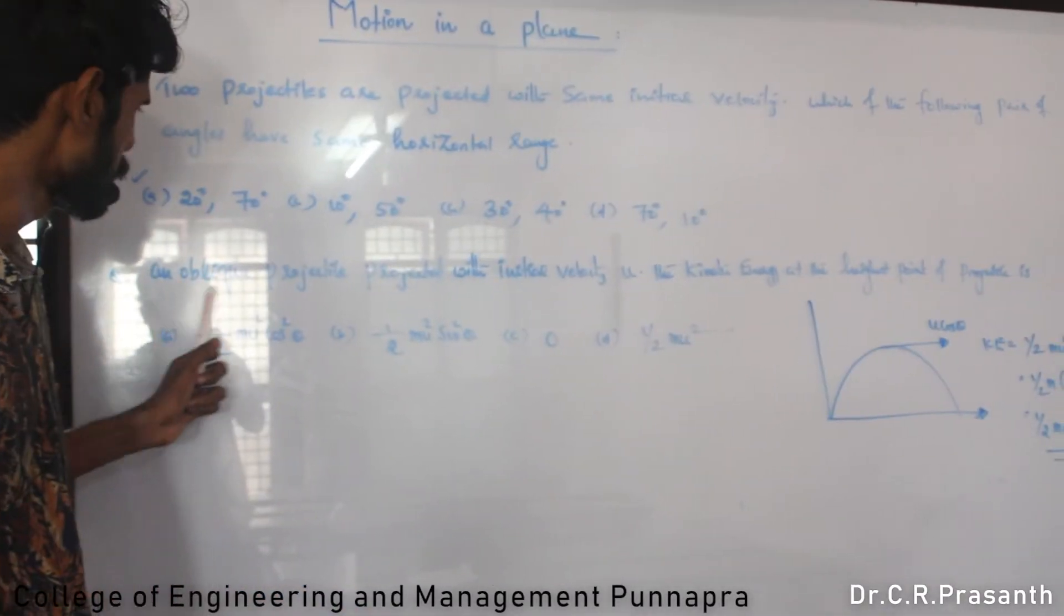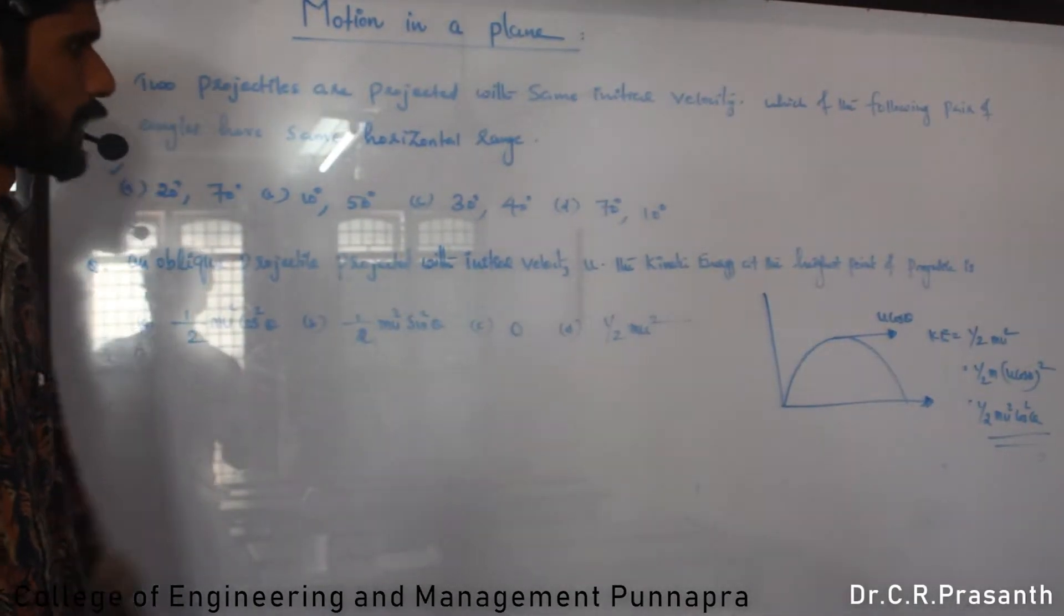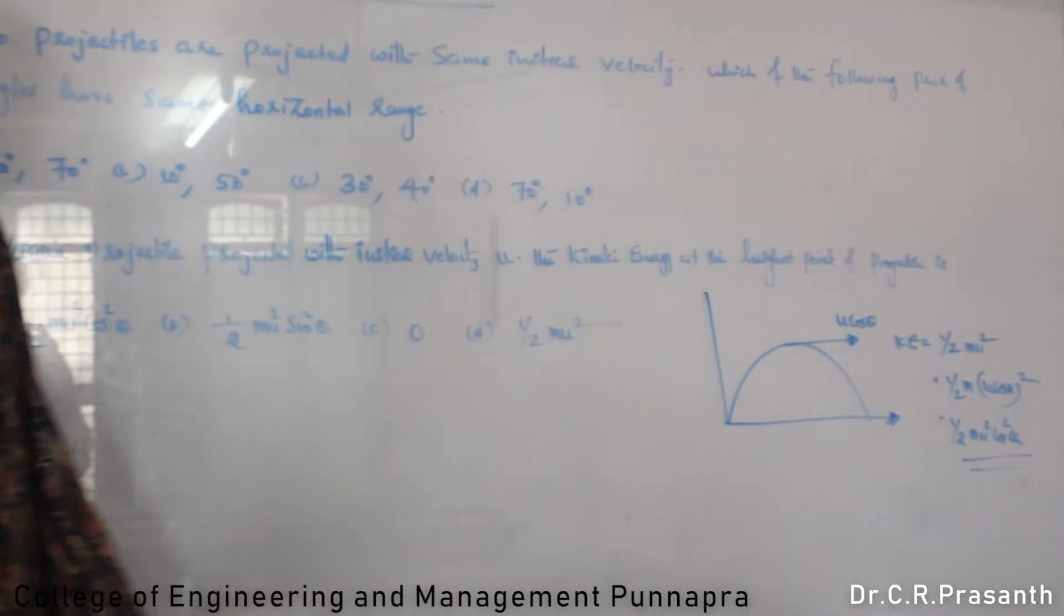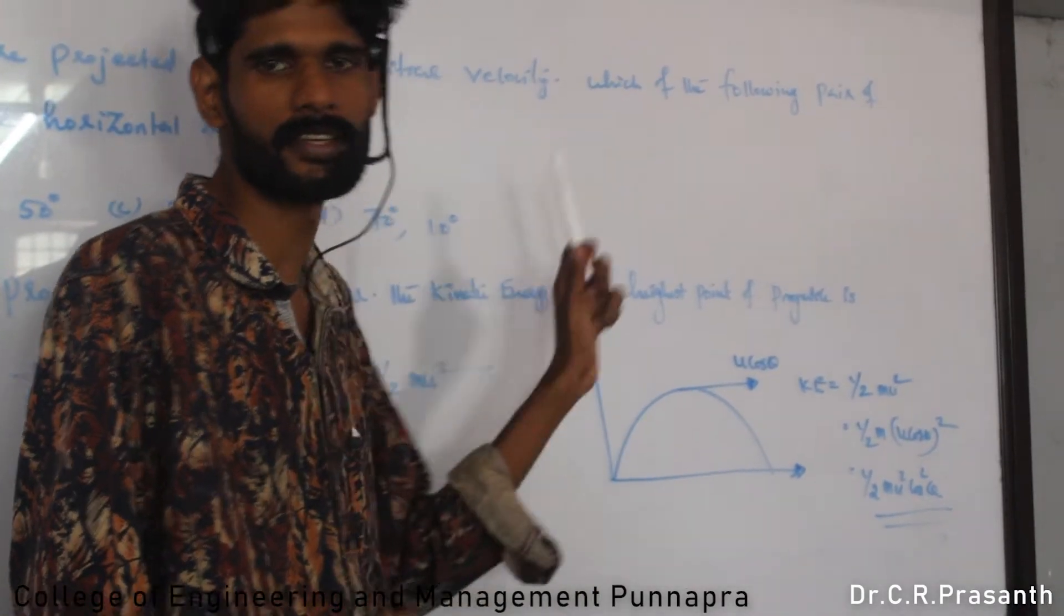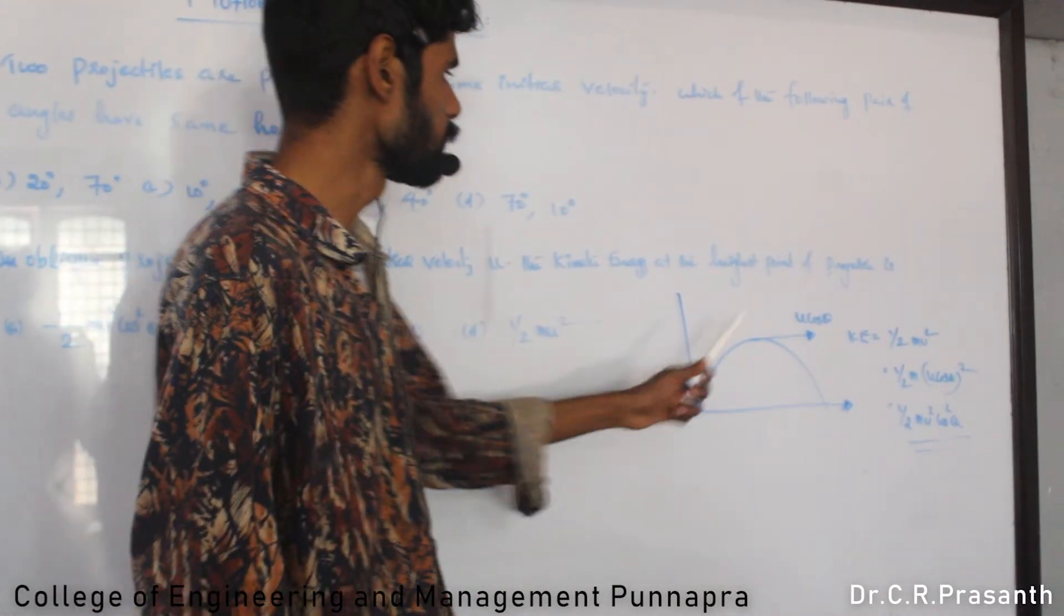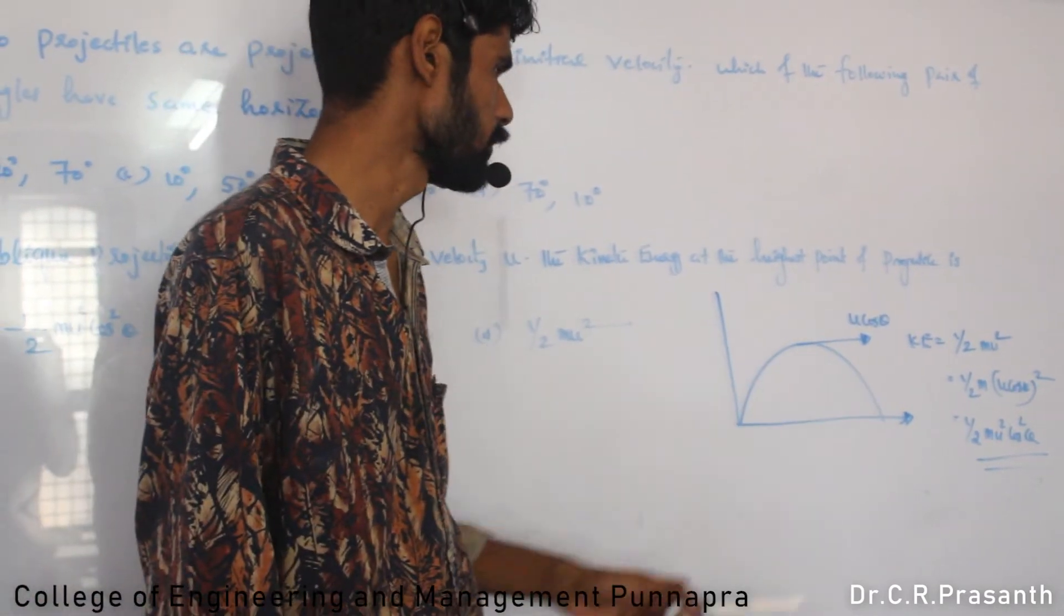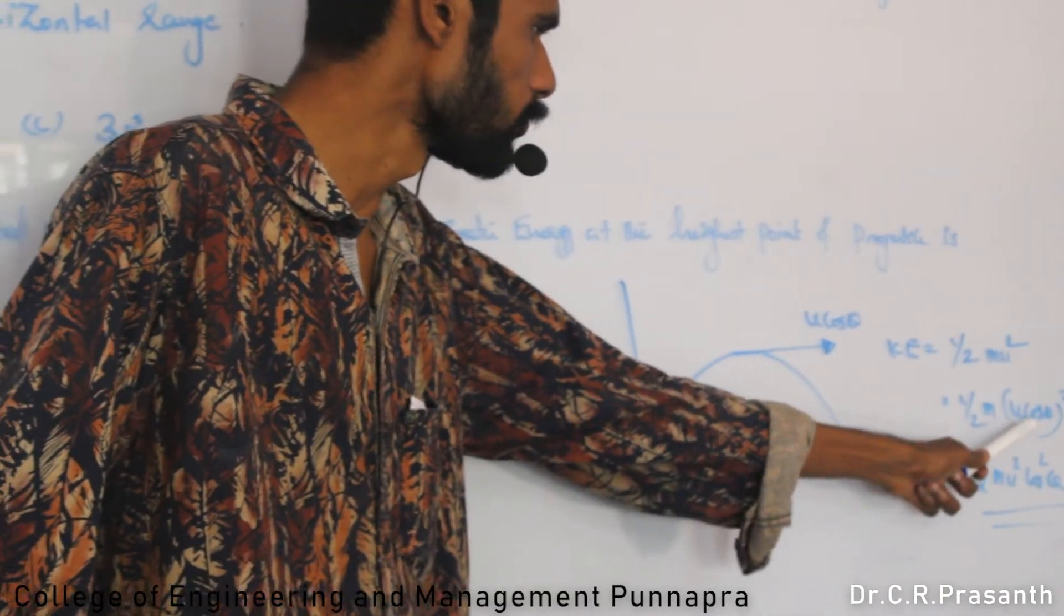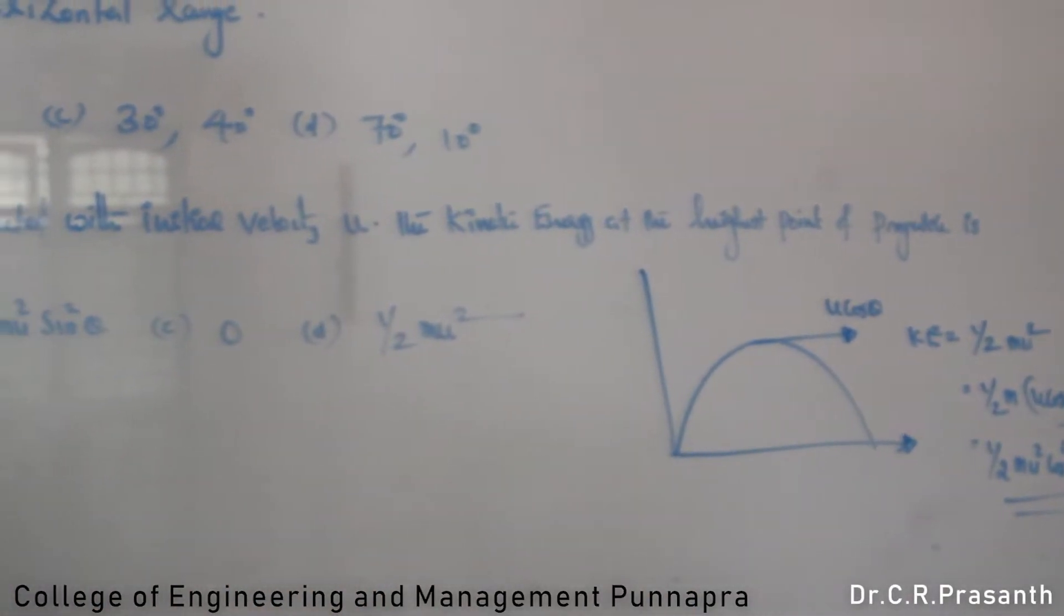A projectile is projected with initial velocity. The kinetic energy at the highest point is? At the highest point, when projecting, it's two-dimensional motion. Velocity is resolved into two rectangular components: u cos theta on x-axis, u sin theta on y-axis. At the highest point, u sin theta becomes zero. Only u cos theta remains. The kinetic energy is due to u cos theta. The equation for kinetic energy is K equals half m v squared, which is half m u squared cos squared theta.